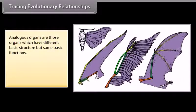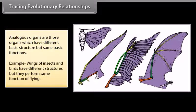Analogous organs are those organs which have different basic structure but same basic functions. Example: Wings of insects and birds have different structures but they perform the same function of flying.